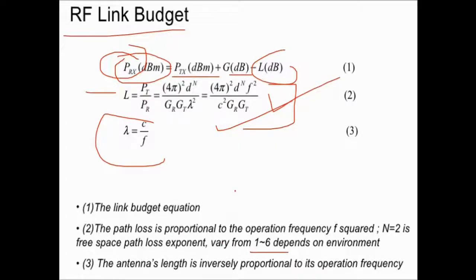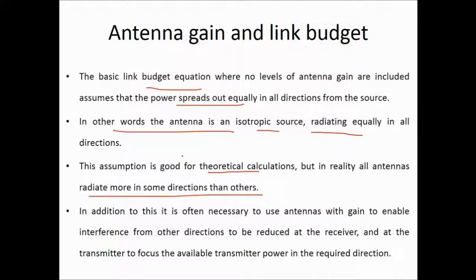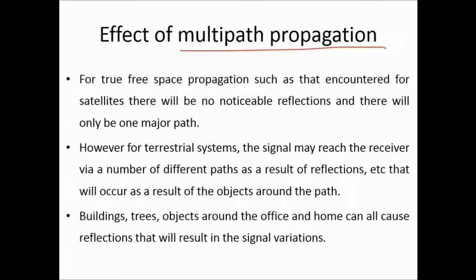The basic link budget equation assumes power spreads out equally in all directions — in other words, the antenna is isotropic. This assumption is good for theoretical calculations, but in reality all antennas radiate more in some directions than others. It is often necessary to use antennas with gain to reduce interference from other directions at the receiver, and to focus transmitted power in the required direction. Gain figures relative to an isotropic source are quoted as dBi (i for isotropic), or dBd relative to a dipole.